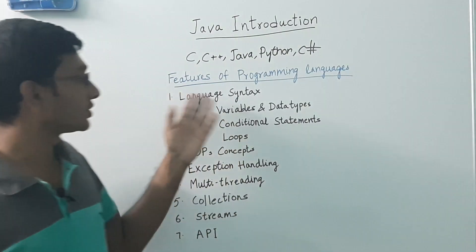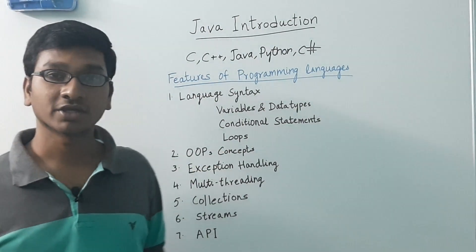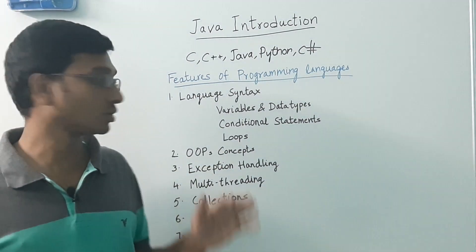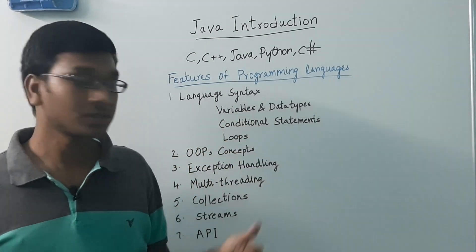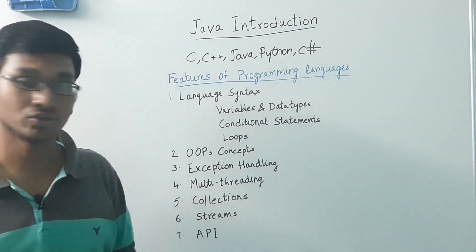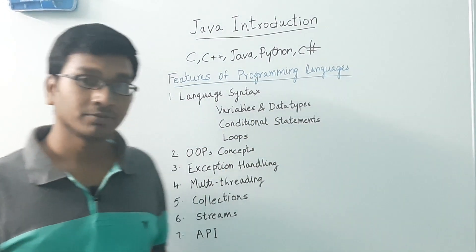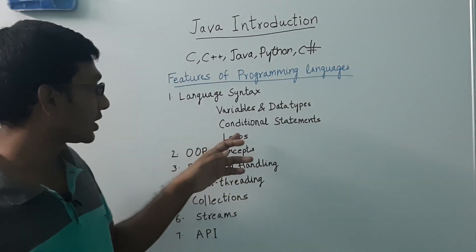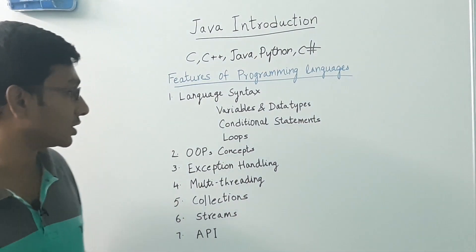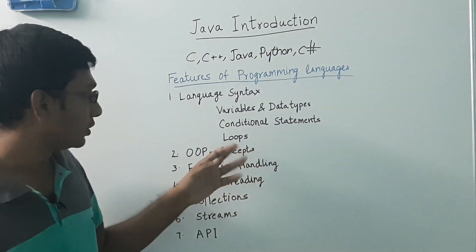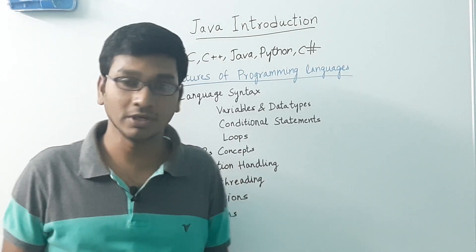So these are the features of programming languages. It starts with language syntax. Any programming language has its own syntax. It has variables and data types — variables are used to store data, and data types define different types of data to store. We also have conditional statements to check conditions and execute blocks of code, and loops to execute a block of code repetitively.